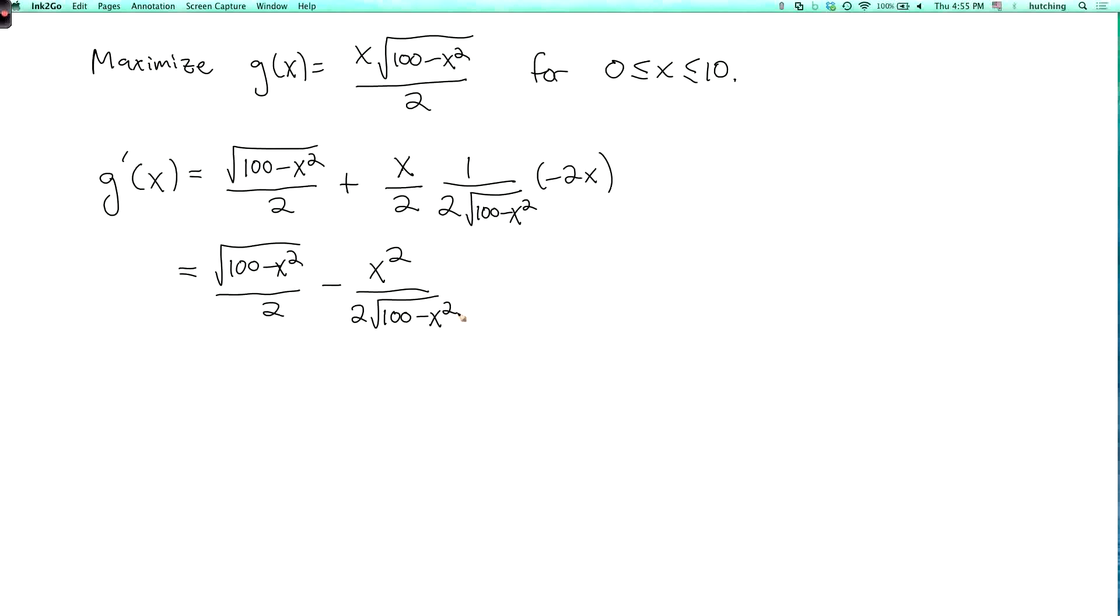I can simplify this expression by multiplying in the first fraction the top and the bottom by the square root of 100 minus x squared. So then I get 100 minus x squared over 2 square root of 100 minus x squared, minus x squared over 2 times the square root of 100 minus x squared. Now I can combine the fractions to write this as 100 minus 2x squared over 2 square root of 100 minus x squared.